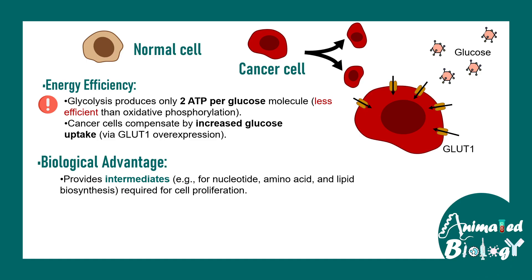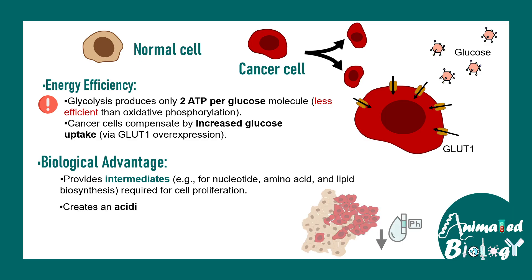The biological advantages are plenty, because the glycolytic intermediates provide the raw materials for making new nucleotides, amino acids, and lipids. All these raw materials are required for cell division and making new cells, and that is crucial for a rapidly proliferating cell like the cancer cell.